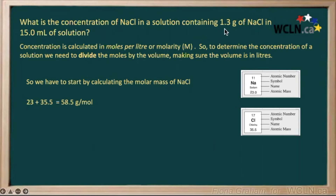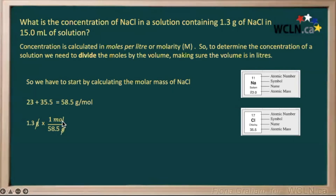But we only have 1.3 grams, so let's use this to figure out how many moles that is. If we take 1.3 and multiply that by our conversion factor, our grams cancel out top and bottom, giving our final units in moles, which is what we want. So we would have 1.3 divided by 58.5, giving us 0.0222 moles.